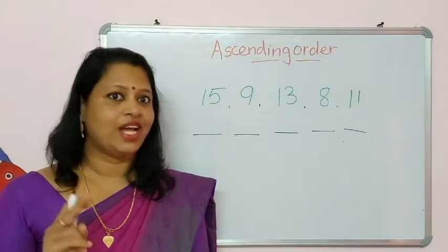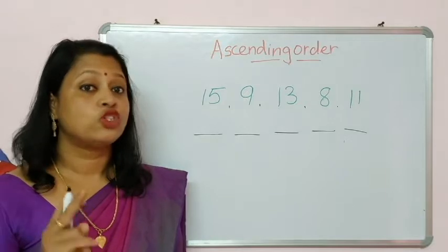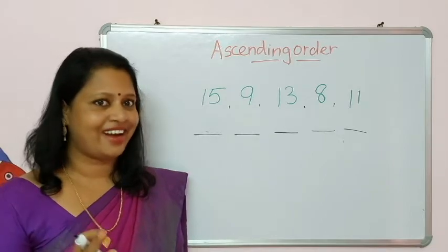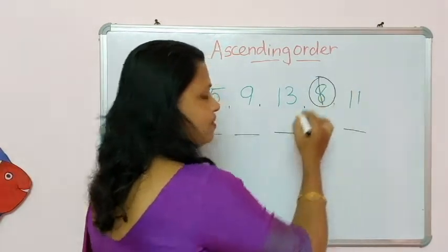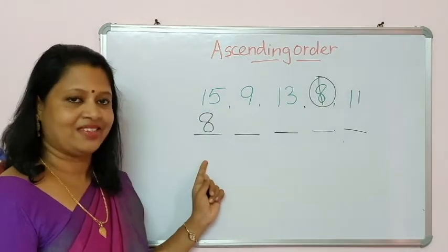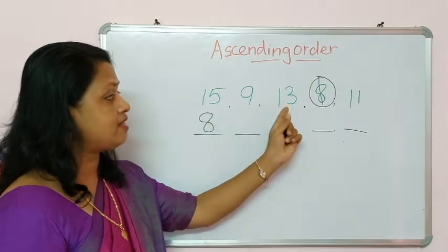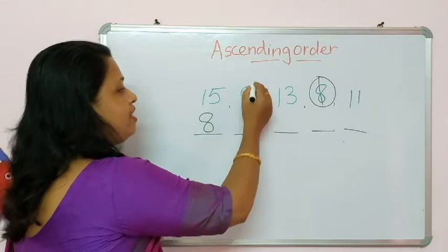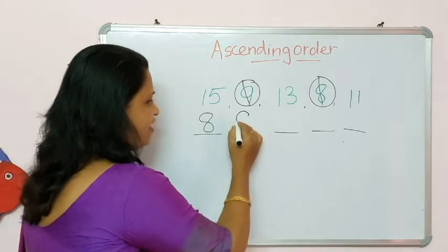Now let's do one more example of ascending order. Ascending order means small to big. Which is the smallest number here? Right, number 8. So we are going to cut this number and write 8 here. Now which is the smallest number among 15, 9, 13, 11? Which is the smallest number here? Right, number 9. So now we are going to cut this number and write 9 here.